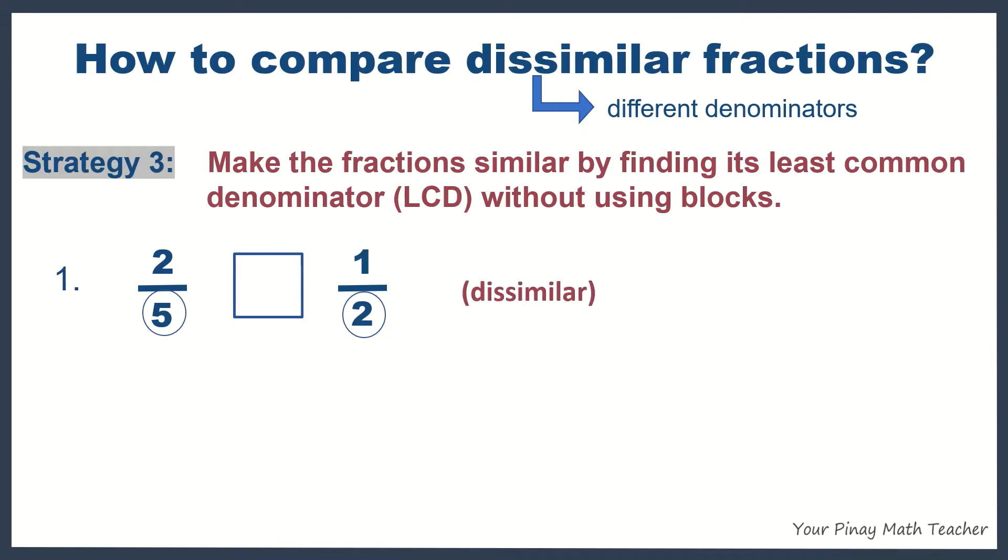Two-fifths and one-half are dissimilar fractions because they have different denominators. We have to make them similar by finding the LCD or least common multiple. By the way, multiples are products or results when you multiply a certain number by 1, 2, 3, 4, and so on.